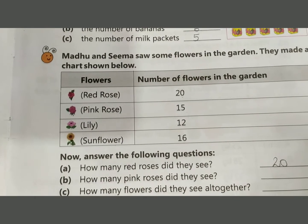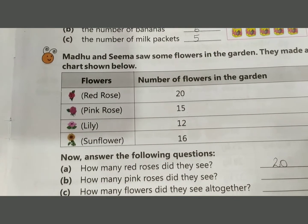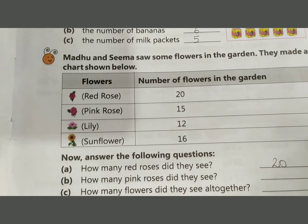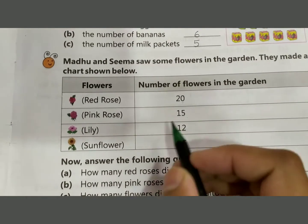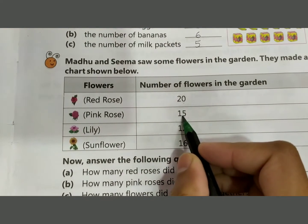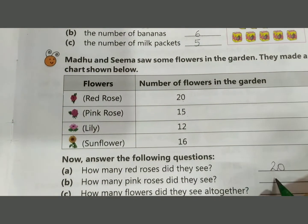Next question: how many pink roses did they see? The answer is 15. Write 15.